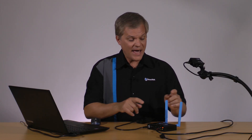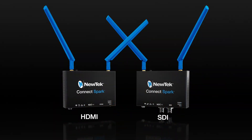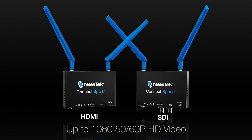It also has the added benefit of being able to use over WiFi. Connect Spark comes in both an SDI version and an HDMI version, and you can use it with video all the way up to 1080 50p or 60p high-definition.